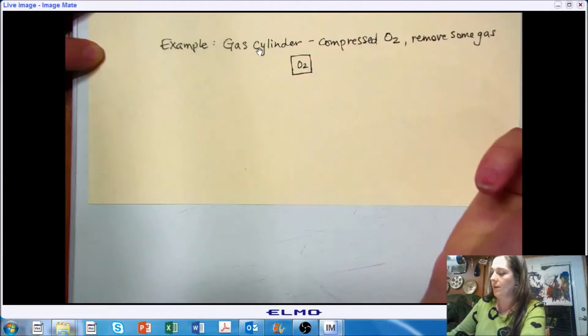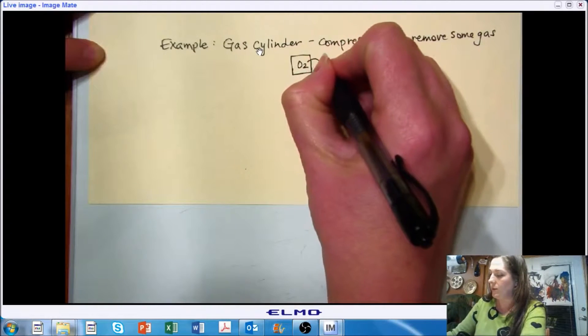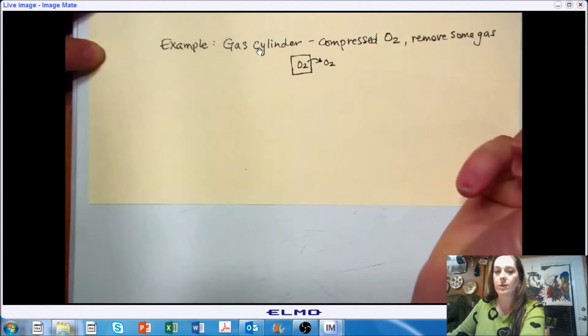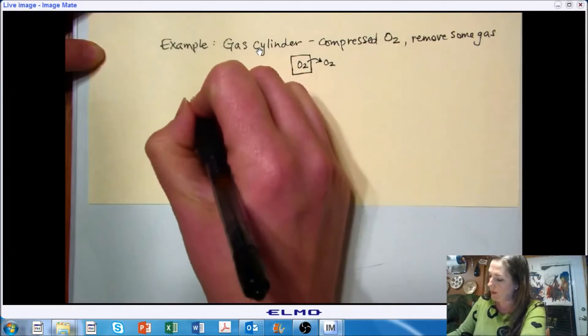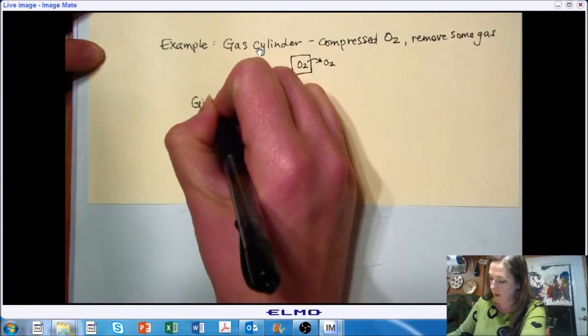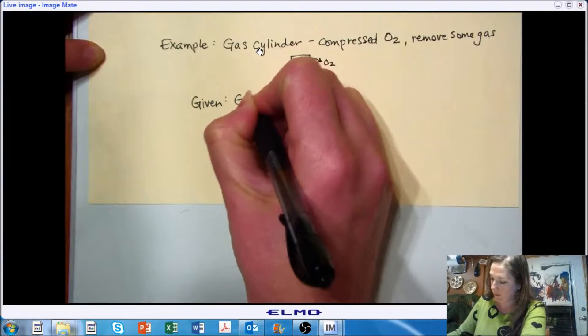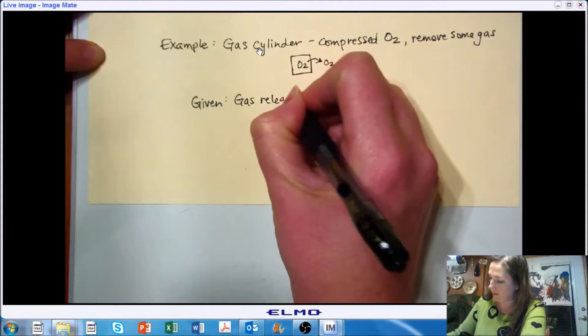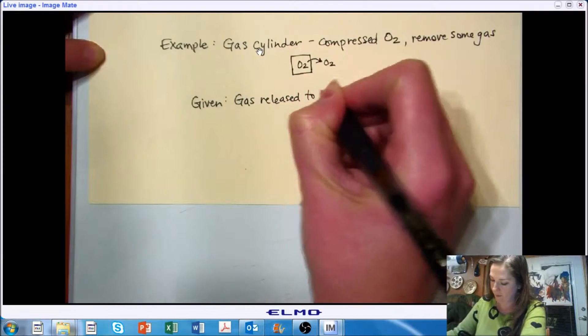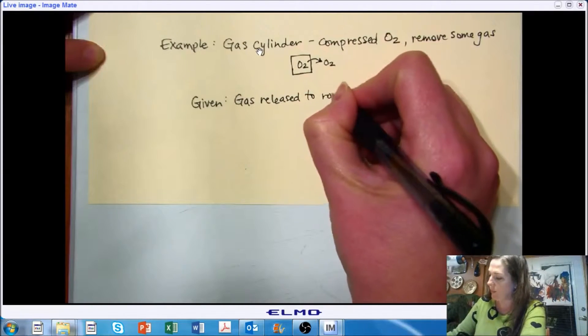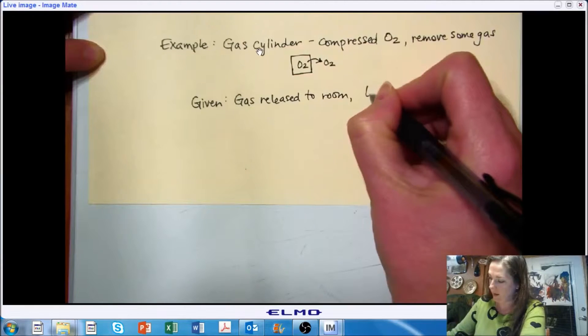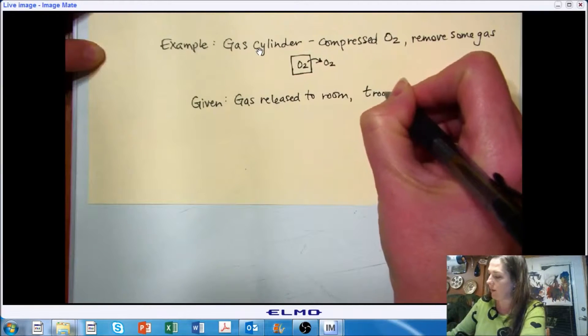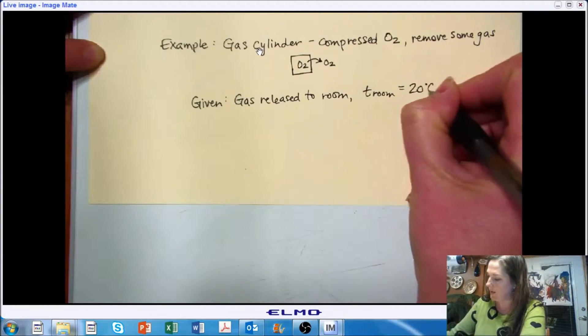And we are going to take out some O2, right? So what we are given is that we have some gas released to our room. We're going to be given that the temperature of our room is 20 degrees C.